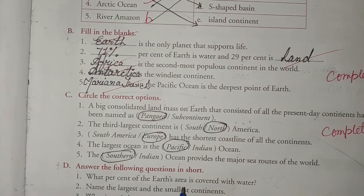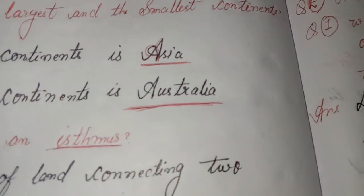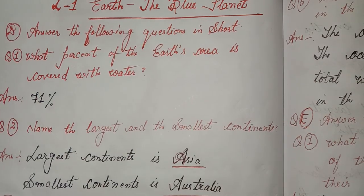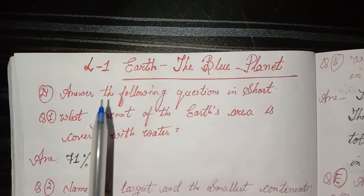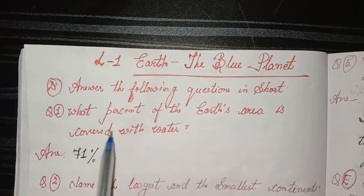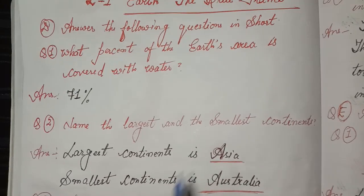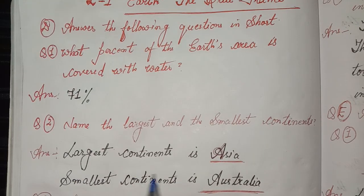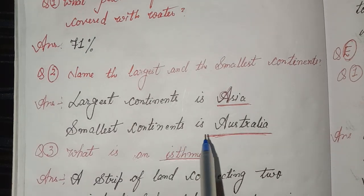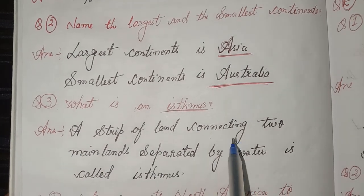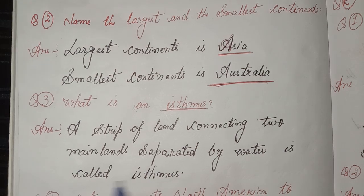Answer the following questions in short. I will solve these questions in the notebook. What percent of the Earth's area is covered with water? 71%. Name the largest and the smallest continents. Largest continent is Asia. Smallest continent is Australia. What is an isthmus? A strip of land connecting two mainlands separated by water is called an isthmus.